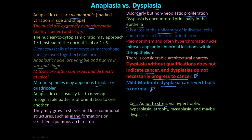Cells adapt to stress via hypertrophy — one cell becomes just a bigger cell; hyperplasia — cells respond to stress by making more of the original cell so they don't die; atrophy — they shrink; or metaplasia — where one cell type converts to another. For example, in a smoker's lungs, columnar epithelial cells with cilia convert into stratified squamous epithelial cells due to toxic smoke exposure.